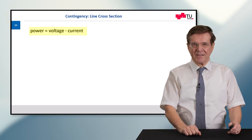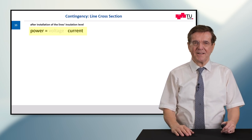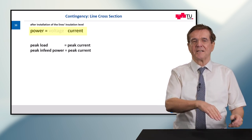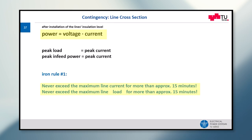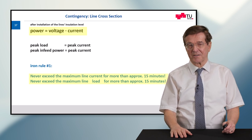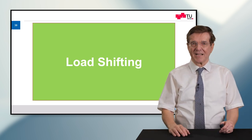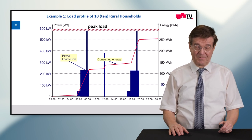Once again back to the power limitation by the cross sections. Once you have determined the voltage level, lines and equipment insulation level, then the peak load corresponds to the peak current. This leads to the iron rule number one: Never ever exceed the maximum line current for more than approximately 15 minutes, and never exceed the maximum line load for more than approximately 15 minutes.